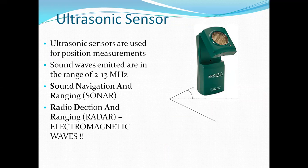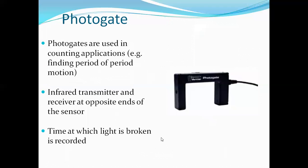Here is the type of sensor. It is ultrasonic sensors. High frequency range. Frequency is being operated. These are the sensors for position measurements. Sound waves emits in 20 kilohertz to 20 megahertz frequency. Sound navigation and ranging, SONAR. And radio detection and ranging sensors, RADAR using electromagnetic waves.